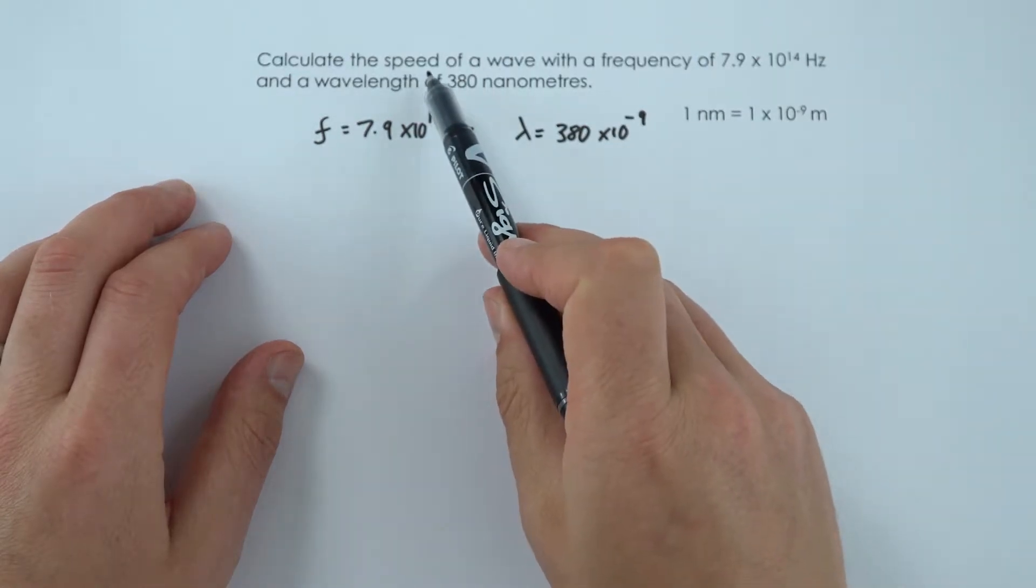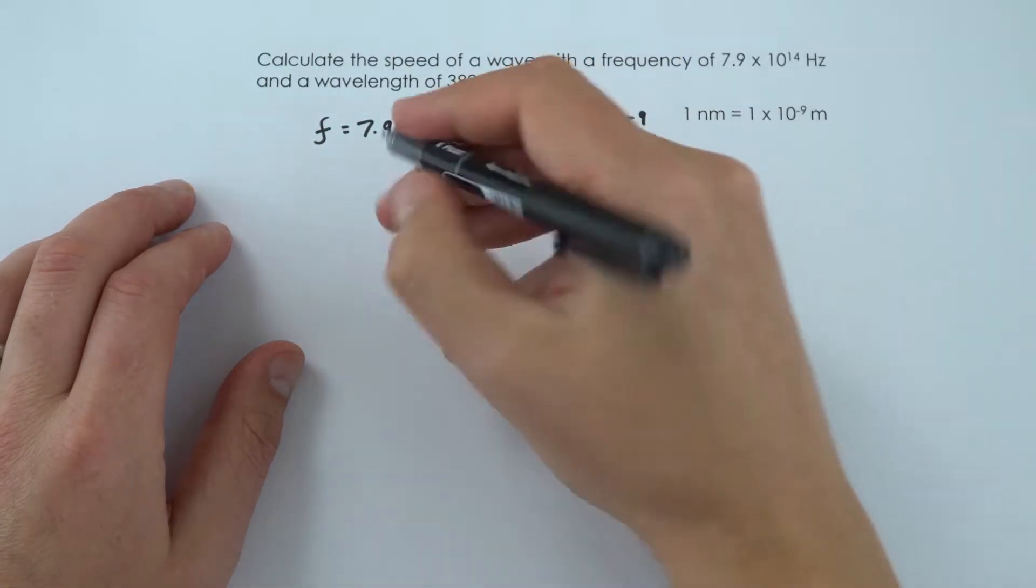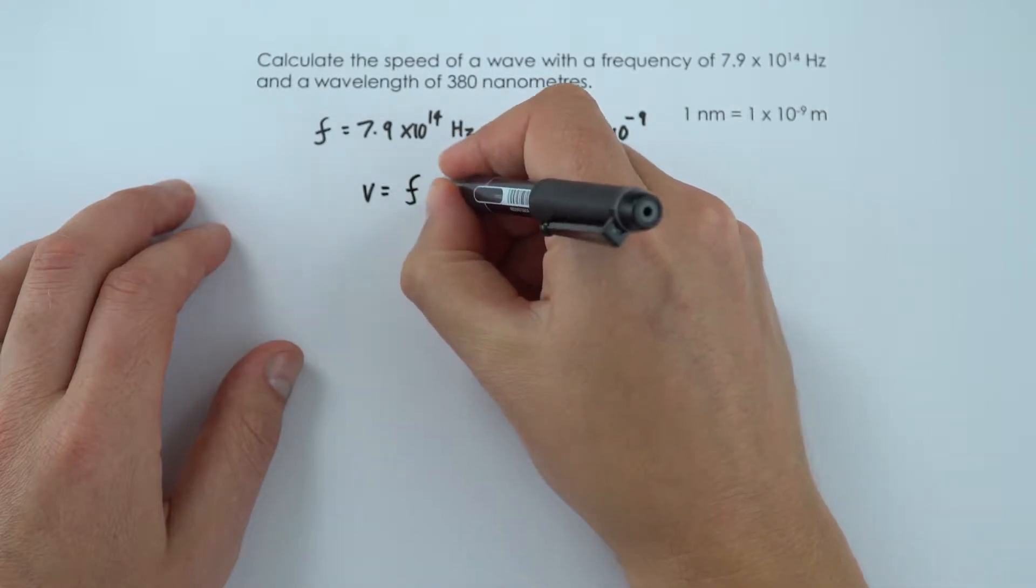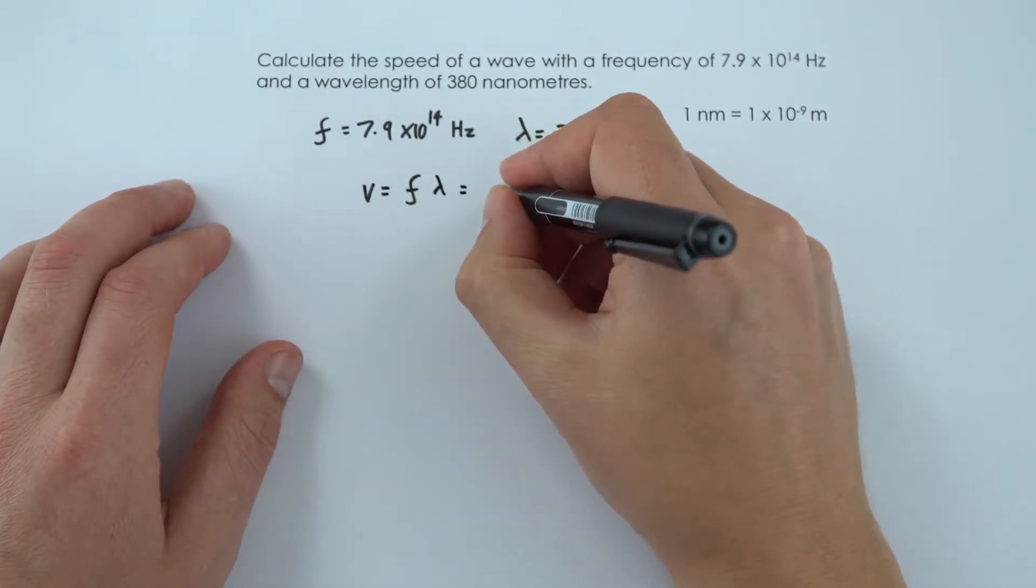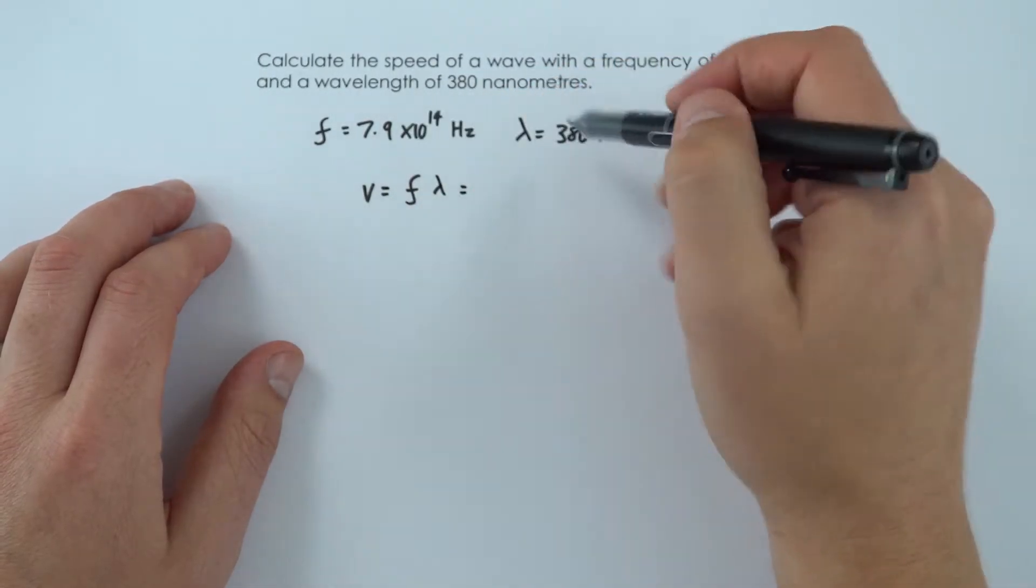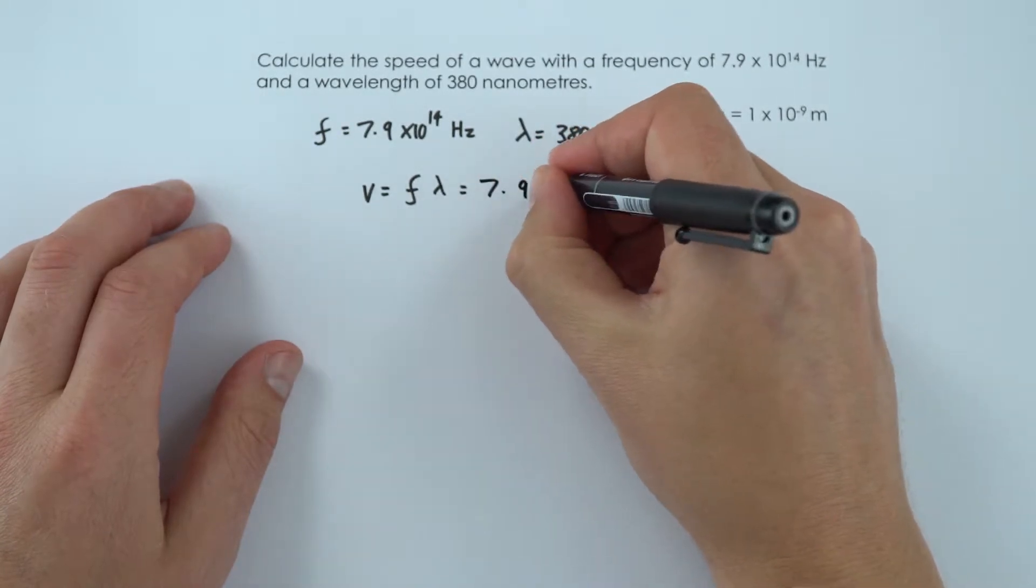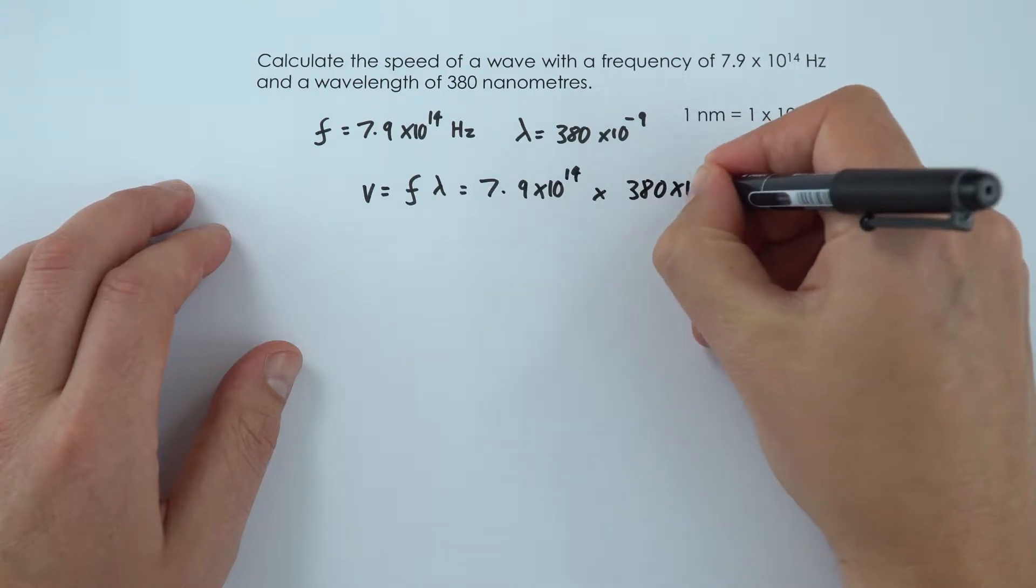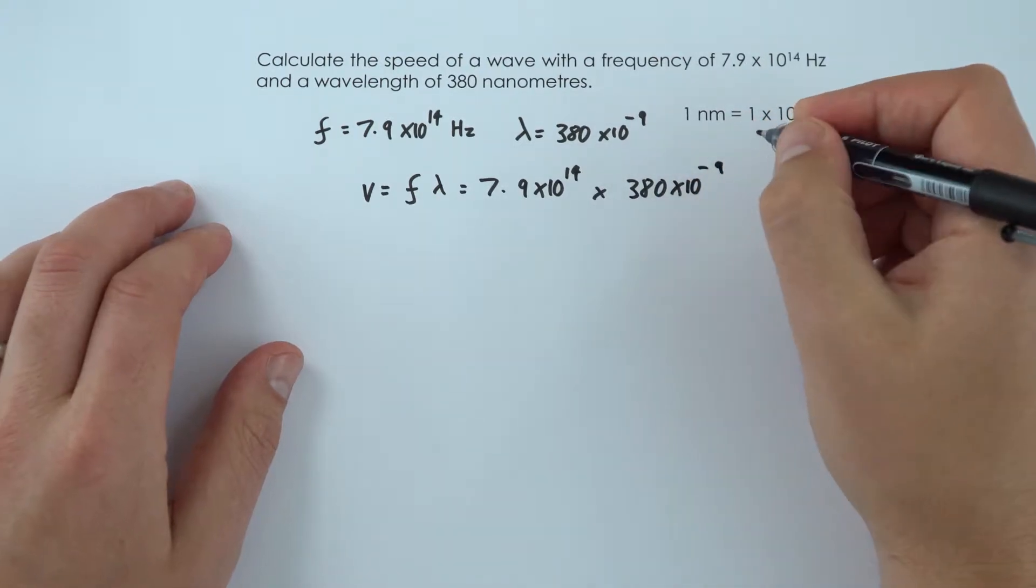Now what we're trying to find out is the speed, and we know f and we know lambda, and then we're going to use the equation that says wave speed is equal to the frequency multiplied by the wavelength. So that's just going to be equal to these two numbers multiplied together, so 7.9 times 10 to the 14 multiplied by 380 times 10 to the minus 9.